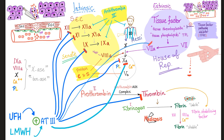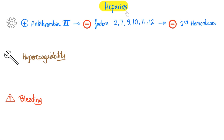Medicine makes so much sense once you understand what you're talking about. Heparins — because there is the unfractionated, the low molecular weight, and the synthetic heparinoid — mechanism of action: heparin will stimulate antithrombin 3 to inhibit factors 9, 10, 11, 12, add thrombin and add factor 7.